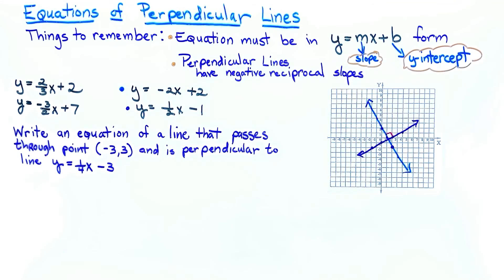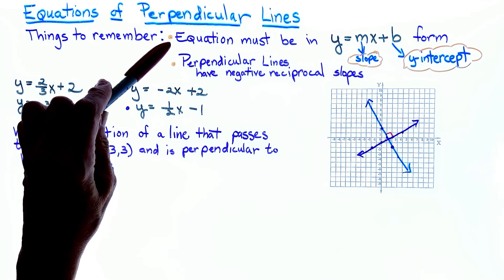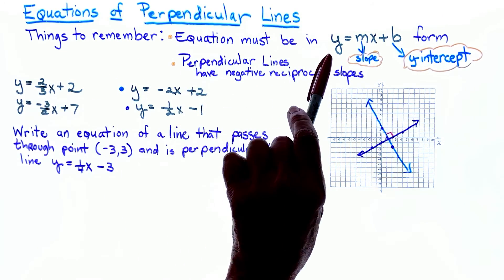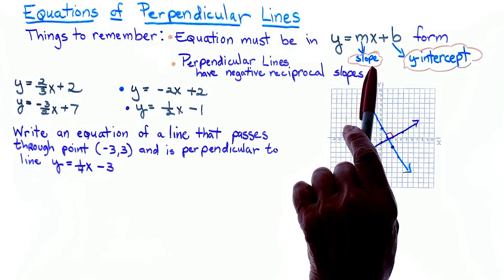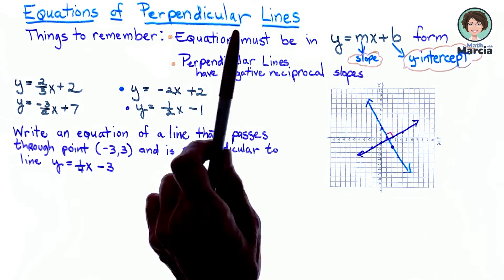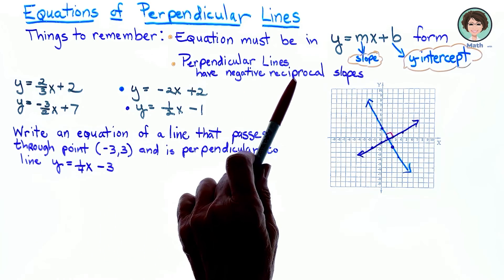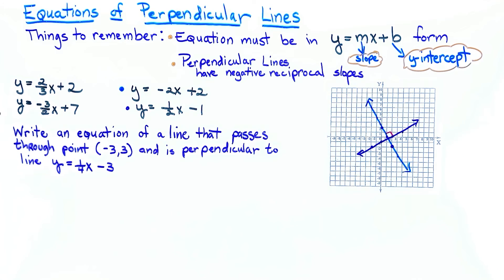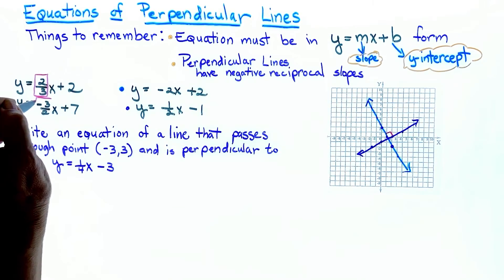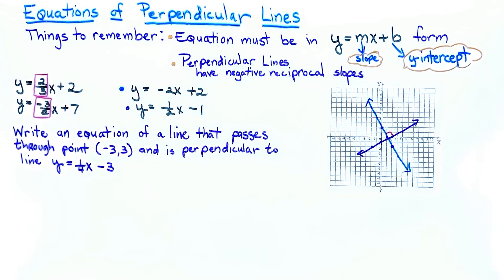For this lesson we're going to talk about equations of perpendicular lines. The equations must be in y equals mx plus b form. Perpendicular lines have negative reciprocal slopes. With y equals two-thirds x plus 2 and y equals negative two-thirds x plus 7, the slopes are reciprocals and opposites of each other — one positive, one negative.